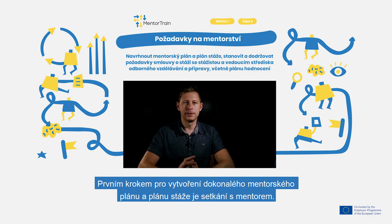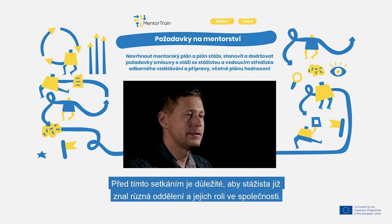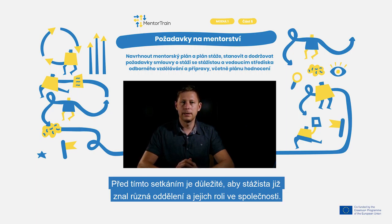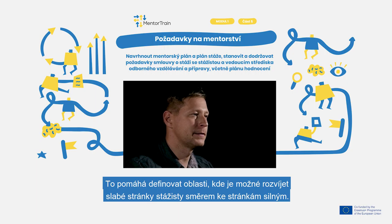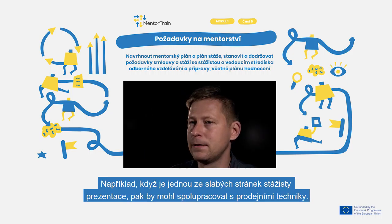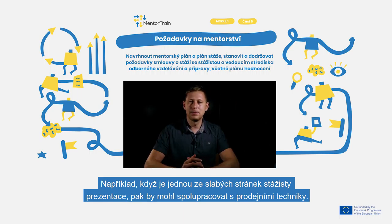The first step for designing a perfect mentoring and apprenticeship plan is meeting with the mentor. Before that meeting, it's important that the apprentice already has knowledge about different departments and their tasks in the company. It helps to find possibilities where we can develop the weaknesses of the apprentice into strengths. For example, when one weakness of the apprentice is presentations, then the apprentice could work together with sales engineers.